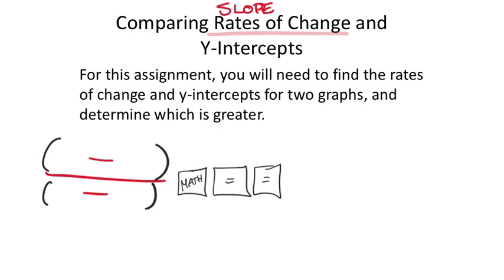The other thing to remember: if we look at a graph and see it's a straight line—linear—then we have to find ordered pairs ourselves. You're looking at the grid corners; hopefully you can find a nice grid corner because we don't want any decimals in those ordered pairs.